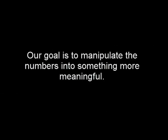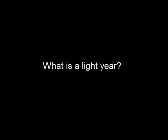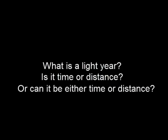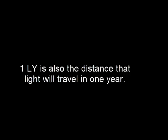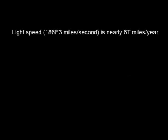Our goal is to manipulate the numbers into something more meaningful. What is a light year? Is it time or distance, or can it be either time or distance? A light year is either one. A light year is one year, and it is also the distance that light will travel in one year. Light speed — 186,000 miles per second — is nearly 6 trillion miles per year.